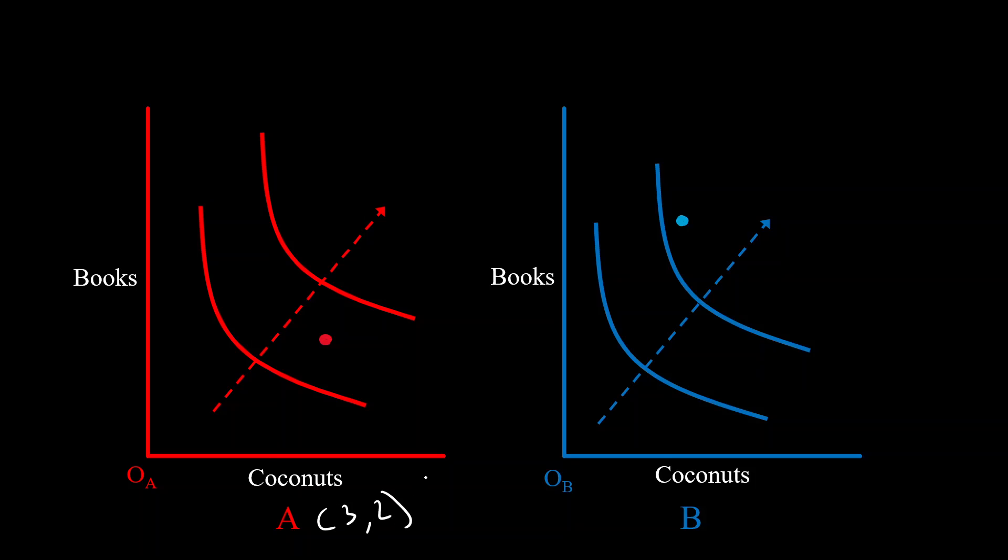Two books and this is his point on the graph and agent B has two coconuts and four books and this is his point on the graph. By the way the amount of stuff they have is usually referred to as an endowment or an allocation. So I'll call it an allocation from now on as well.